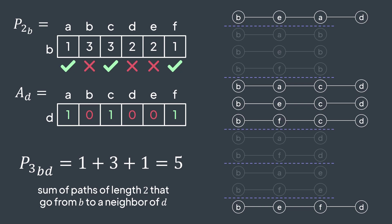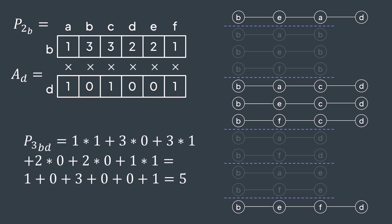Basically, we're calculating the sum of elements of the row b in P2, but only ones that are neighbors of d. Or, instead of searching for neighbors, we can just multiply each value using the column of d in the adjacency matrix, because it contains 1 if the vertex is a neighbor of d, and 0 otherwise. So we'll sum neighbors of d only. We get 1 times 1 plus 3 times 0 plus 3 times 1 plus 2 times 0 plus 2 times 0 plus 1 times 1. We get a total of 5. Same result.